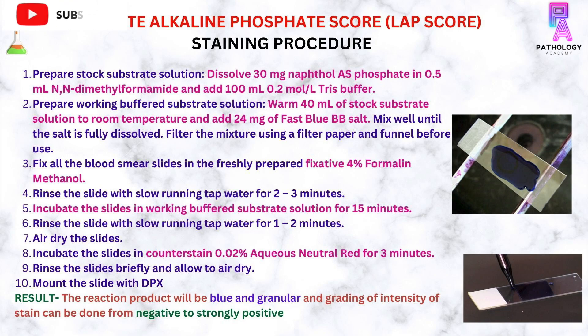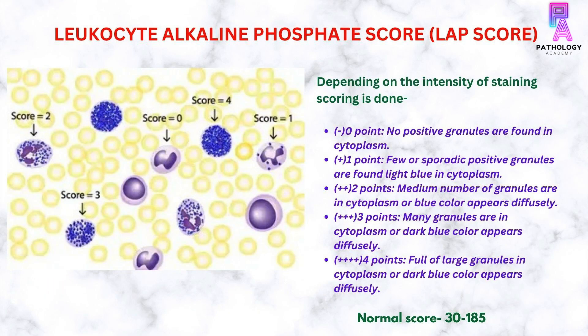The result: the reaction product will be blue and granular, and the grading of intensity of stain can be done from negative to strongly positive. Depending on the intensity of staining, scoring is done. 0 point is given when no positive granules are found in the cytoplasm. 1 point is given when there are few sporadic positive granules in the cytoplasm of the neutrophil.